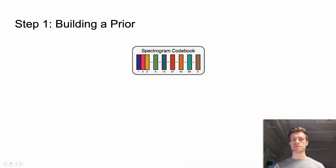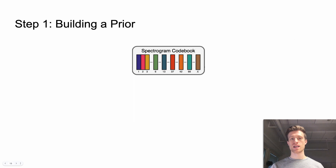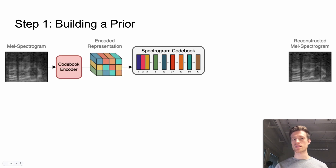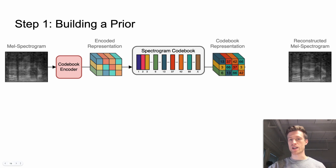In the first step, our goal is to build a spectrogram codebook. Here we are going to use a variant of VQAE called VQGAN. We plug in the original spectrogram and want the autoencoder to output a close reconstruction of the input. The encoder forms a small-scale representation of the input. We are going to pair each vector in this representation with the nearest element of the codebook.